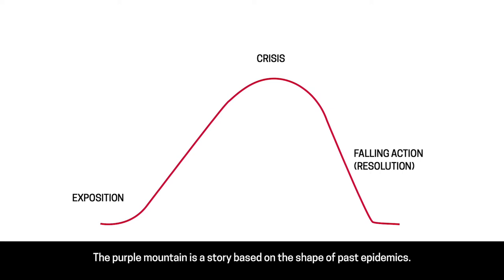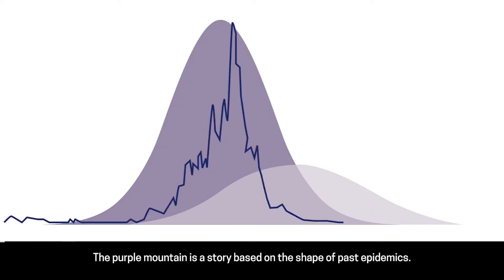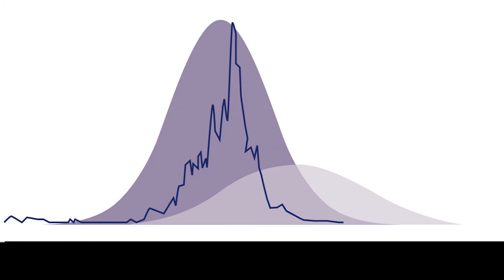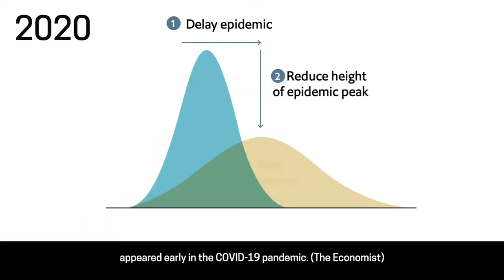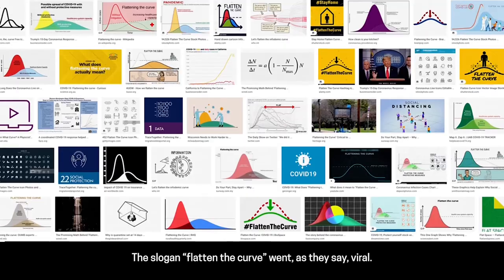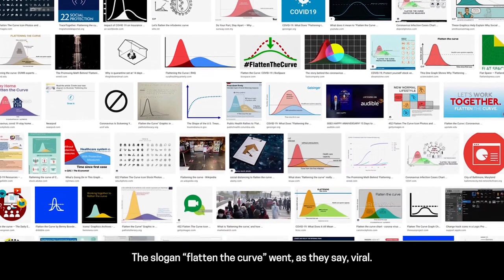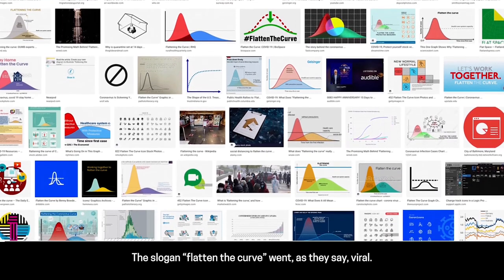The purple mountain is a story based on the shape of past epidemics. A new version of flatten the curve appeared early in the COVID-19 pandemic. The slogan 'flatten the curve' went, as they say, viral.